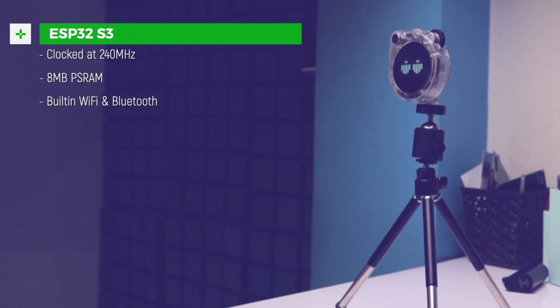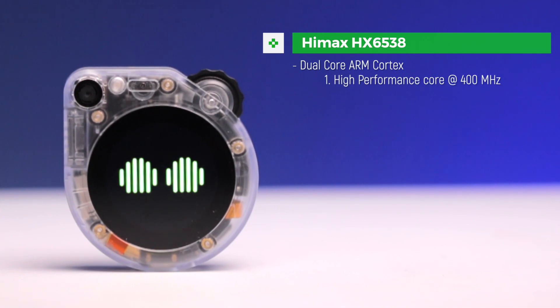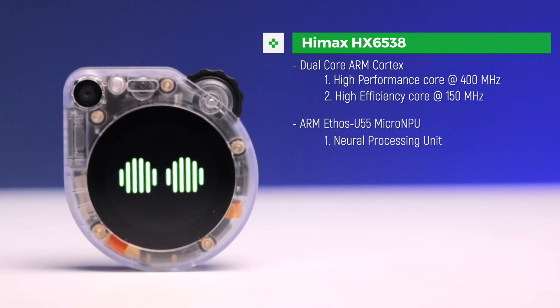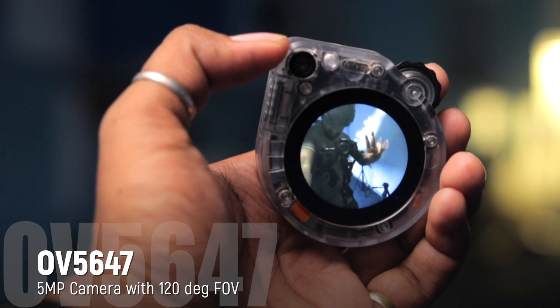The main controller has a dedicated flash memory of 32 MB. For AI-related tasks there is a dedicated microcontroller, the Himax HX6538, based on a dual-core ARM Cortex chipset — one high-performance core running at 400 MHz and one high-efficiency core running at 150 MHz. It is also integrated with the ARM Ethos-U5, a micro NPU (Neural Processing Unit) running at 400 MHz.